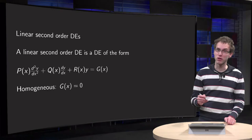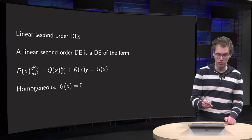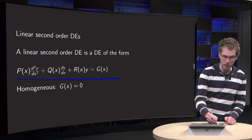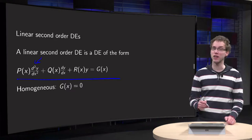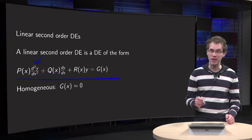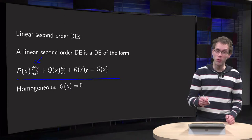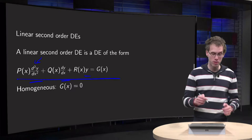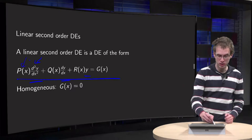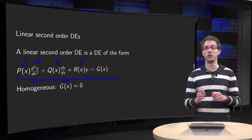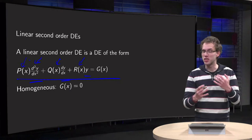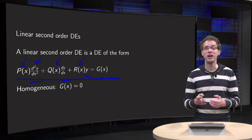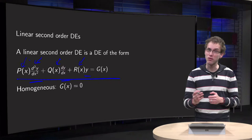A linear second order differential equation is a differential equation of the following form. What makes it second order is that you have a second derivative as the highest derivative. What makes it linear is that y double prime, y prime, and y are only linear in the equation. p(x), q(x), and r(x) may be any function of x, so there is no restriction on how x appears. But the dependent variable y has to be linear in the equation — that makes the differential equation linear.